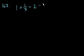We're on problem 167. If 1 plus 1 over x is equal to 2 minus 2 over x, then what is x equal?